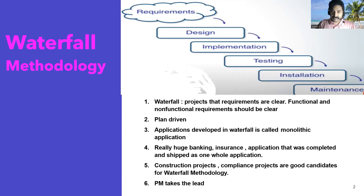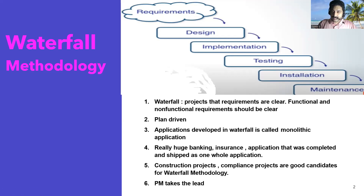Let's talk about constructing a house. When we are constructing a house, we have all the requirements — how many bedrooms, washrooms, floors, parking — everything is known already, so the requirements are clear. Whereas when it comes to software, before 2000, in the 1980s and 1990s, requirements were not so complex because all the systems were standalone, called monolithic applications.